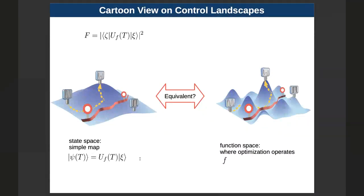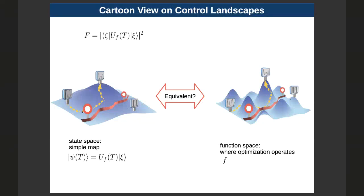The key idea is that you want to find the control field that leads to a trajectory ending exactly at the target state. The approach I'll focus on is the chopped random basis, or CRAB algorithm. You expand your control field into a basis, this expansion is truncated — thus we call it a chopped basis. It is also random because you have random parameters in the basis functions. Once you've defined everything this way, you have few parameters spanning a low-dimensional landscape, and you just let a gradient descent do the job and roll down to the minimum.